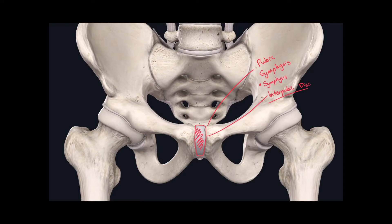Just to review, a joint is when two or more skeletal structures are united together through connective tissue or by cartilaginous tissue. In this case, we have a piece of cartilage uniting the two pubic bones together. So the name of this joint is the pubic symphysis, it is classified as a symphysis, and the disc is called the interpubic disc.